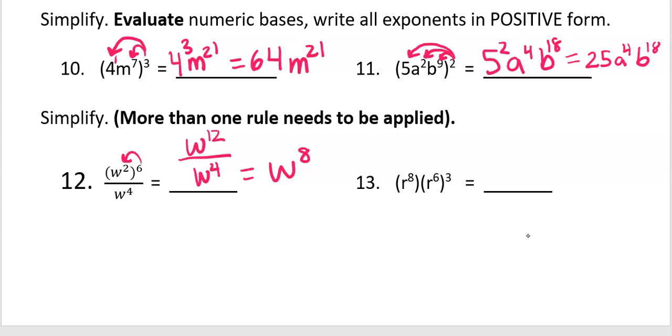Now be careful on number thirteen. One of them is raising a power to a power. The other one is not. So the first one stays the same, but the second one can be simplified to r to the eighteenth. And now I use a different rule, adding the exponents.